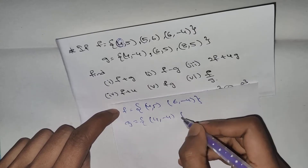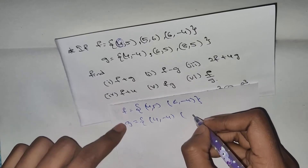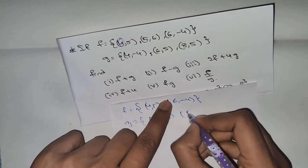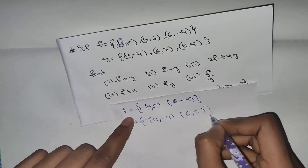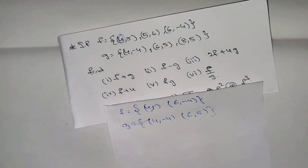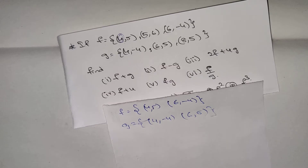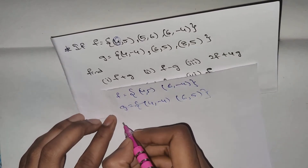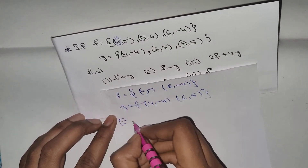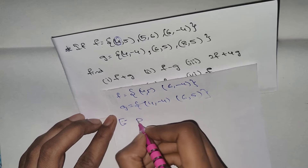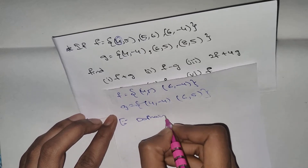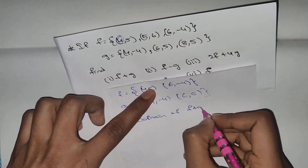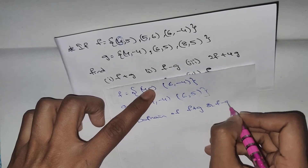4, minus 4. G equals to 6, 6 minus 6.5. We will solve these conditions. We will solve the problem. Domain of F plus G or F minus G.